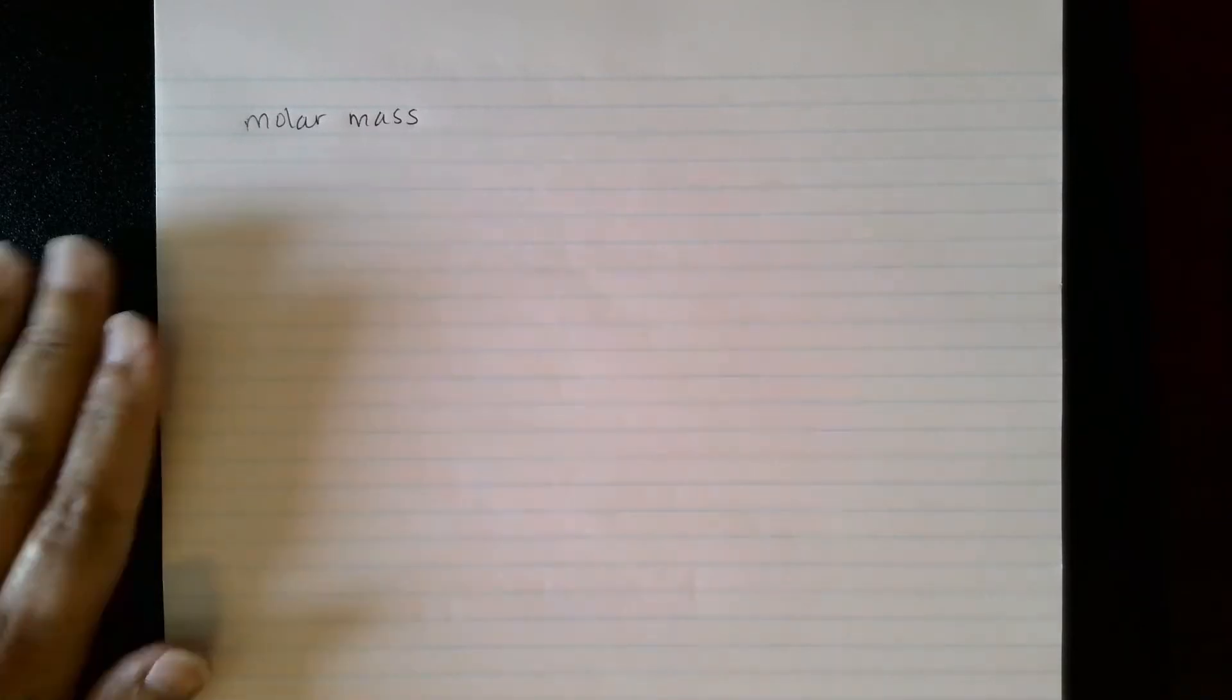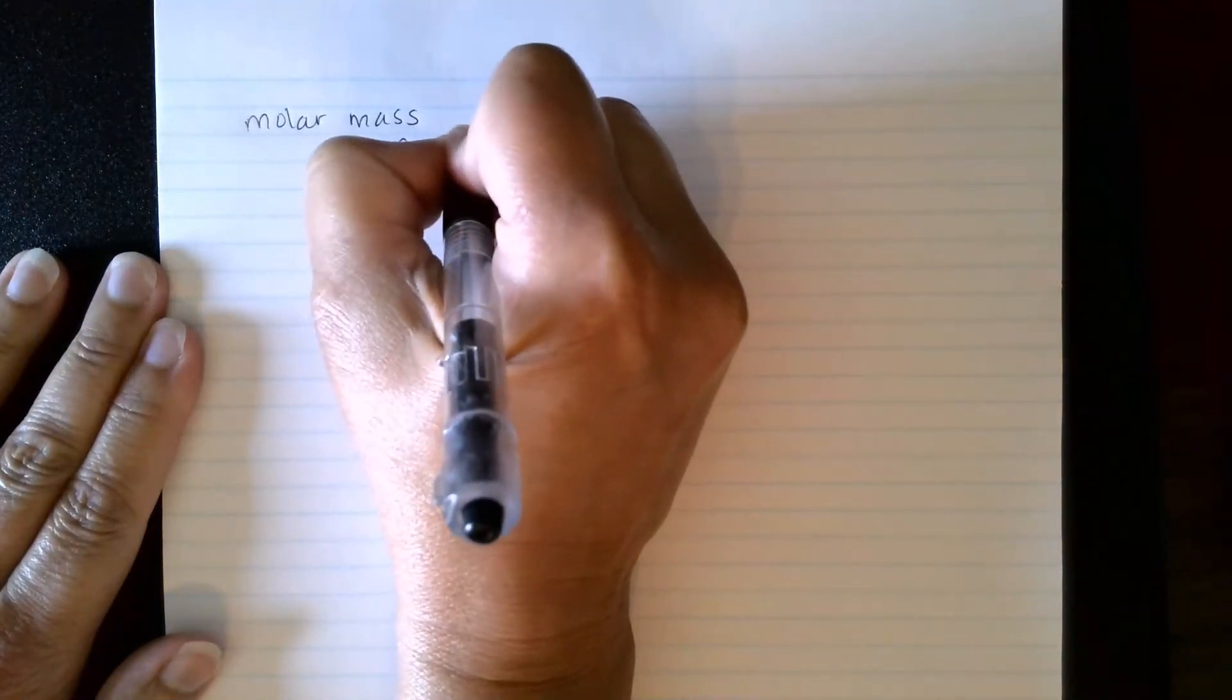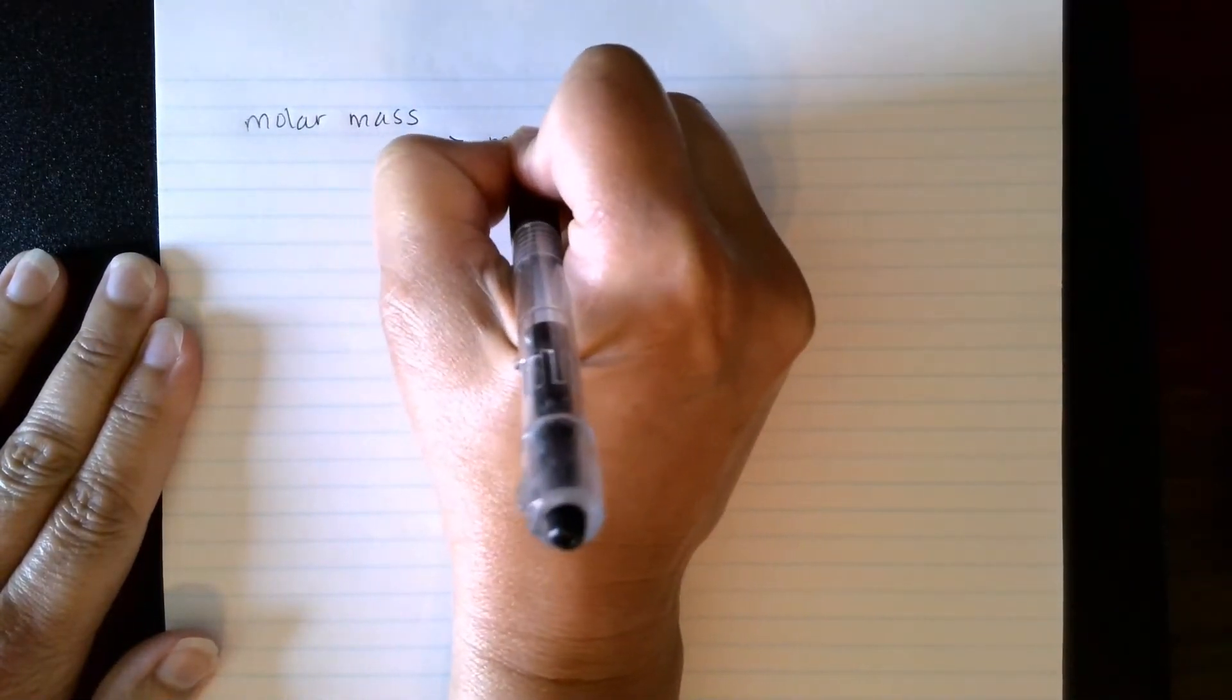This video is going to go over stoichiometry calculations, and we have already looked at molar mass. We know that molar mass is used to help us convert between grams and moles of a substance.